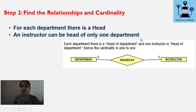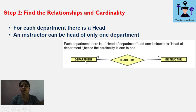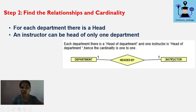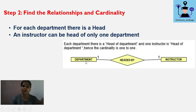For each department there is a head, and an instructor can be head of only one department. This is an important relationship — the department is related to the instructor because one instructor is selected as head of that department. The relationship is 'headed by.' One department is headed by only one instructor, and one instructor can head only one department, so this is a one-to-one relationship.